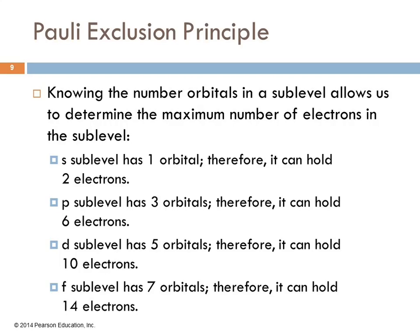So if we know the number of orbitals in a sublevel, we can figure out the maximum number of electrons that can be in there. The S sublevel has one orbital so it can have two electrons. The P sublevel has three orbitals, we get six. D has five, total of ten electrons. F has seven, total of fourteen electrons.